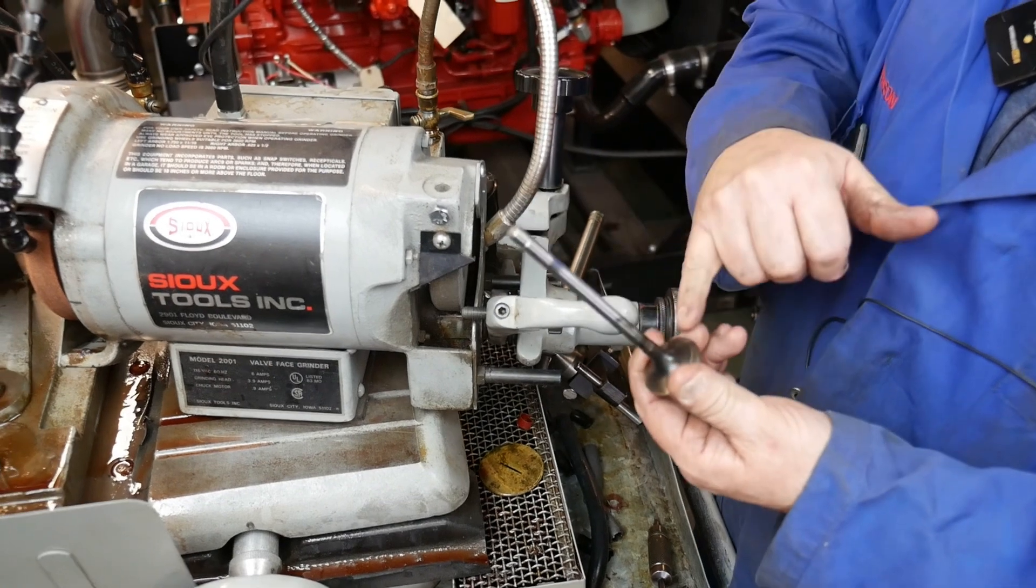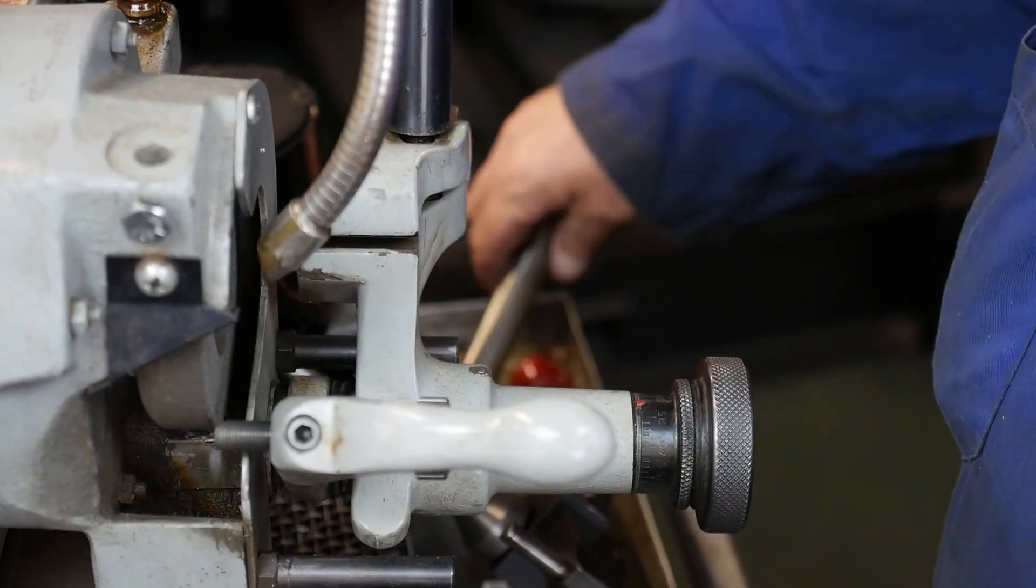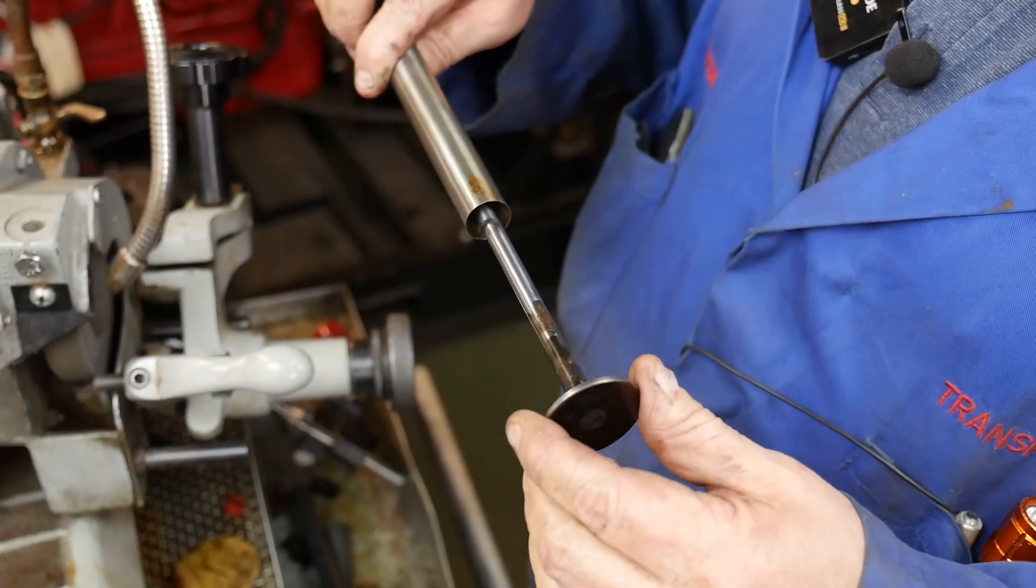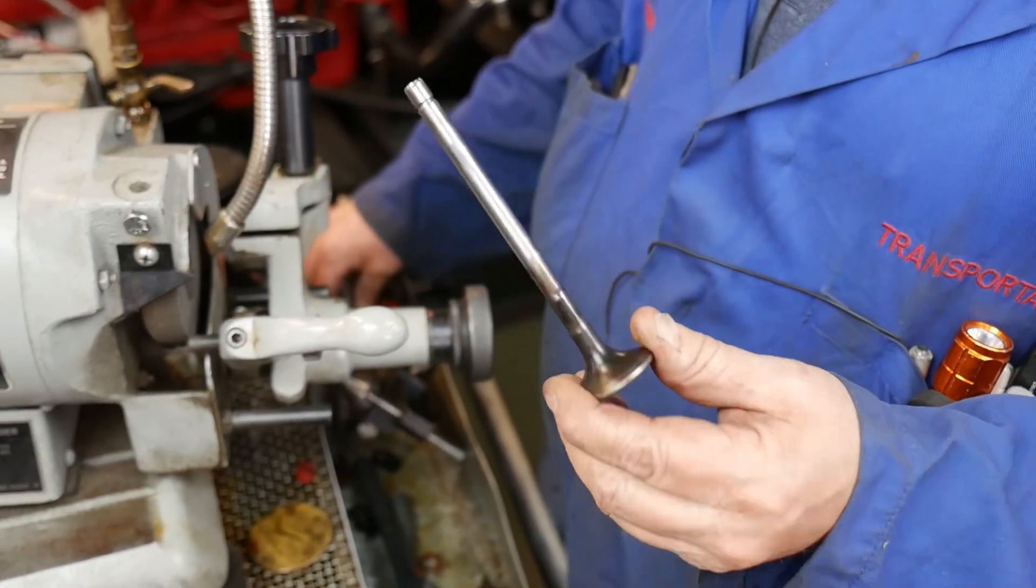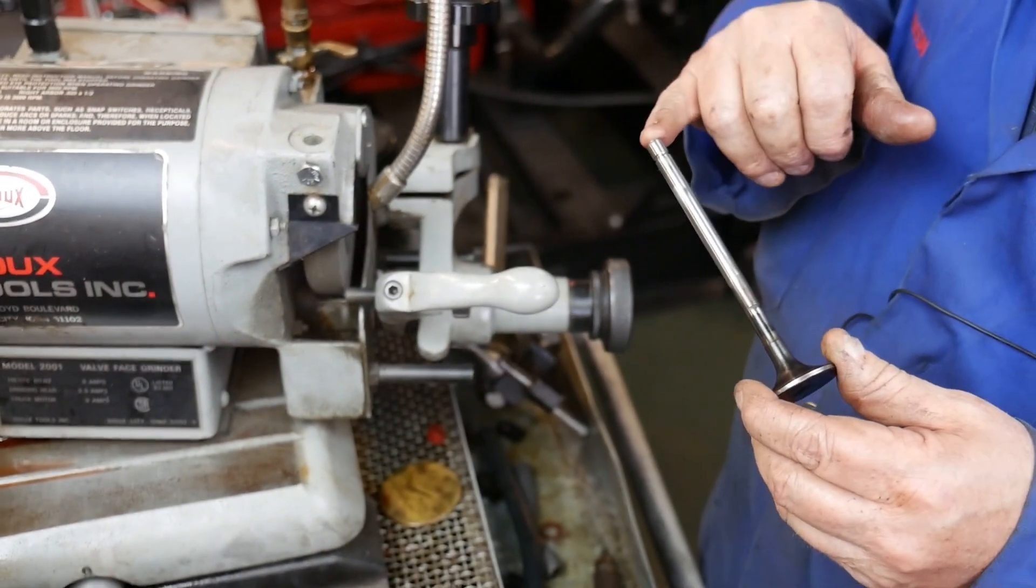Before a valve face can be ground, the tip of the valve has to be ground first. When the valve goes into the valve grinding machine, it needs to go into a nice true grind. We have to grind the tip because oftentimes they're worn from the rocker arm actuating that valve many millions of times.